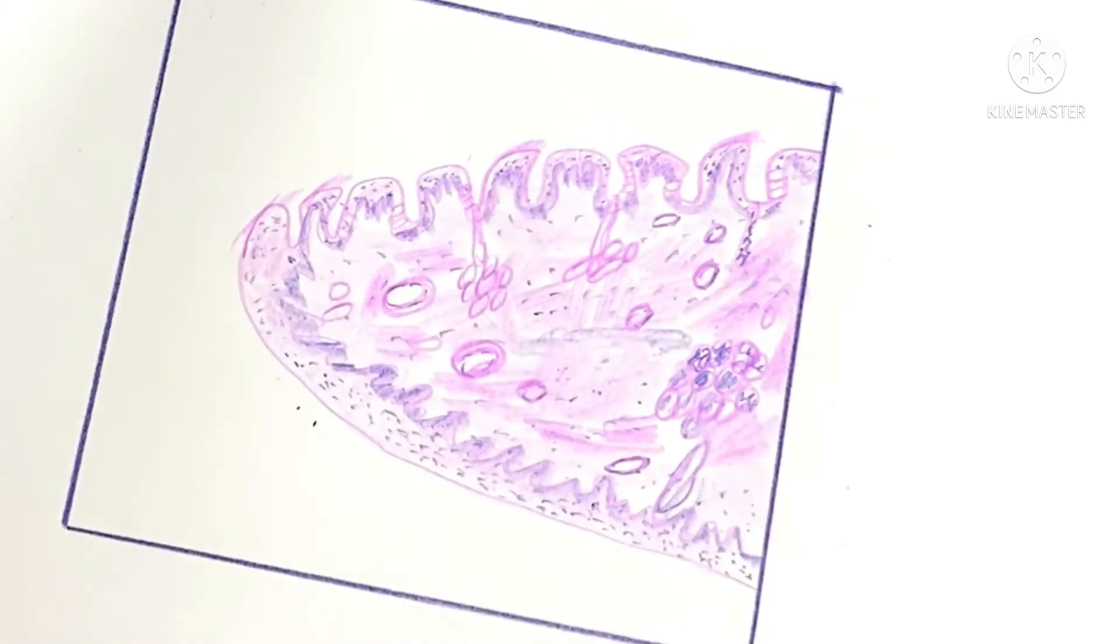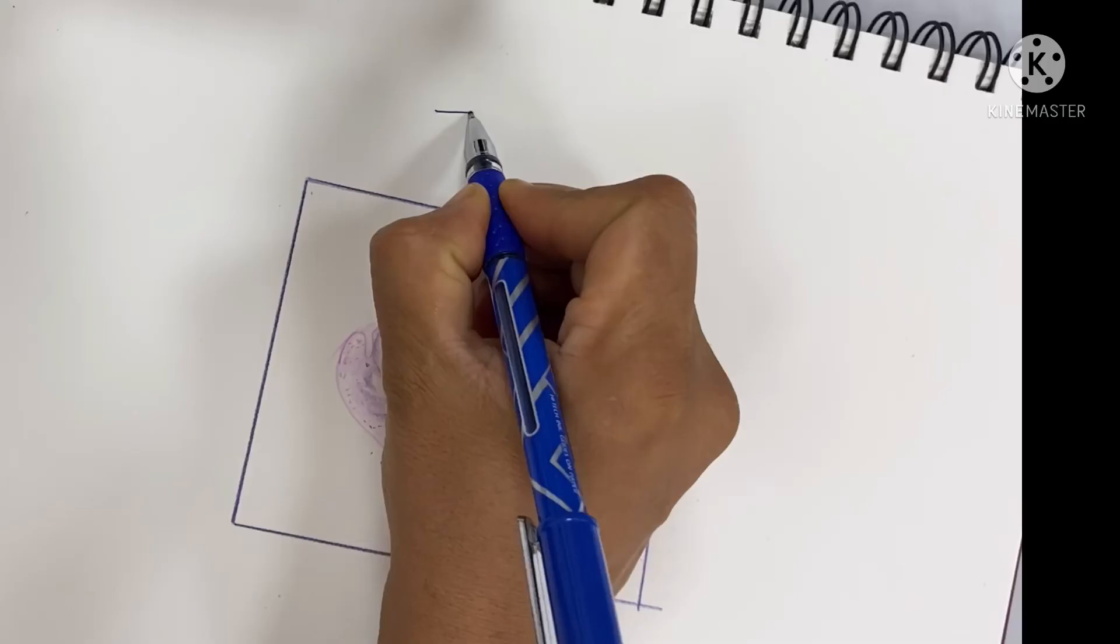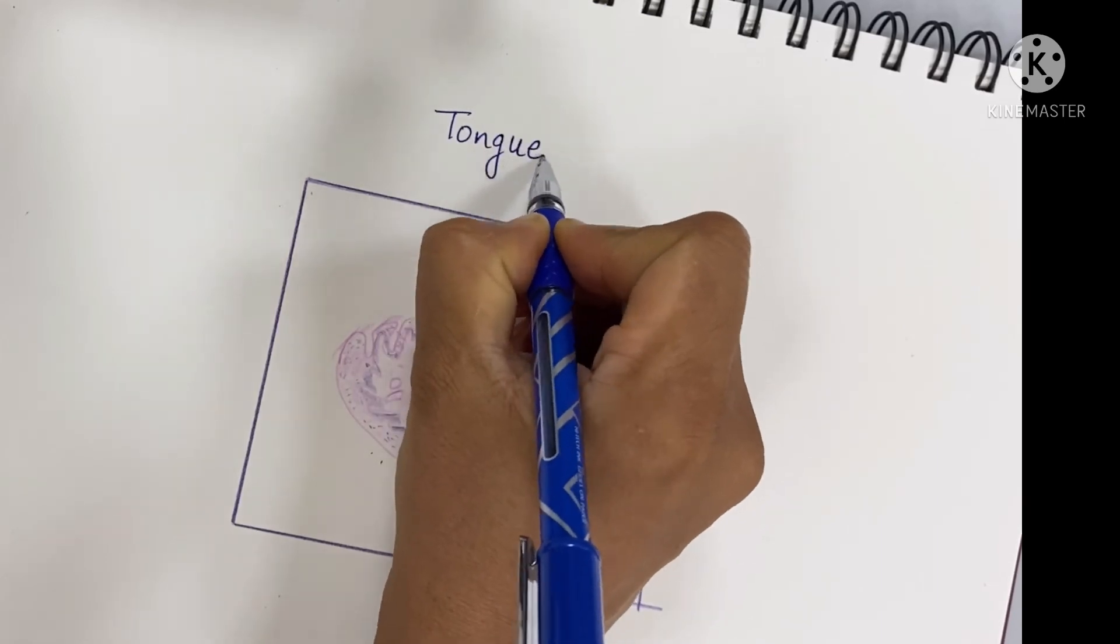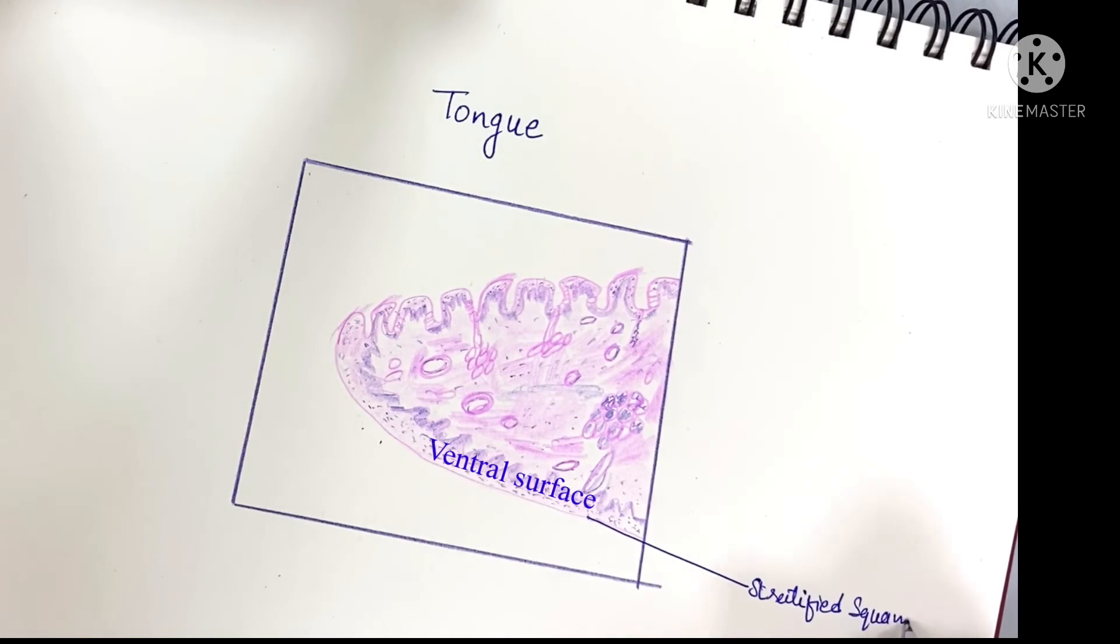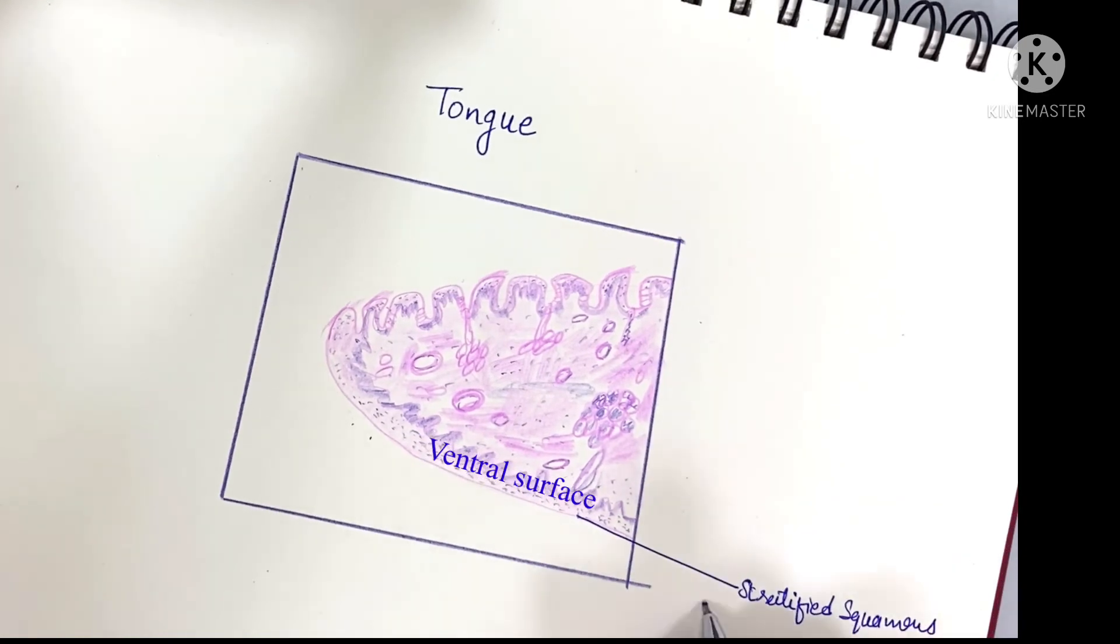There are four types of papillae: filiform, fungiform, circumvallate, and foliate papilla. When we label on the ventral surface, stratified squamous epithelium is present.